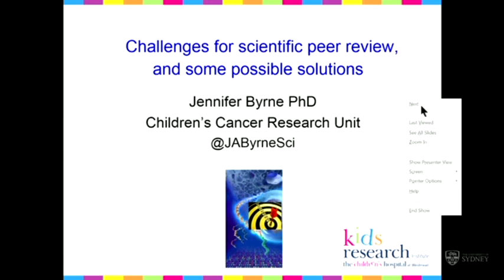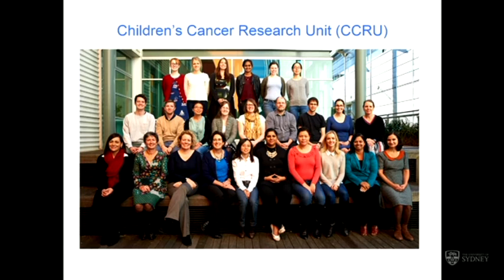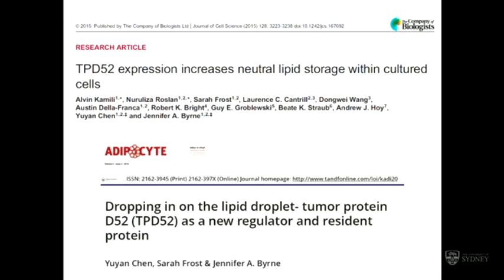I'll just tell you a little bit about myself. I'm from the unit we call the CCRU, out at Westmead — a group of about 30 researchers that study childhood cancer. I've been doing cancer research since the late 80s, and my current research encompasses a number of topics, including how neutral lipid is stored in cells and its relevance in cancer cells. We published a paper last year on that and a more recent commentary.